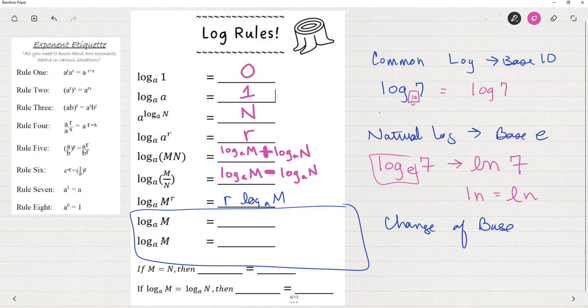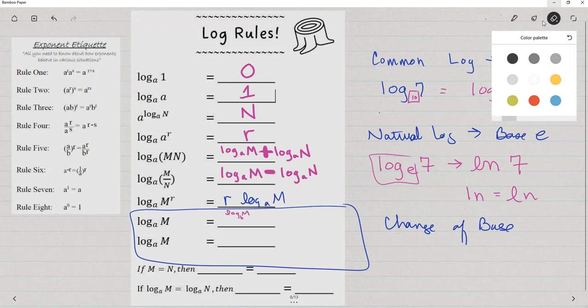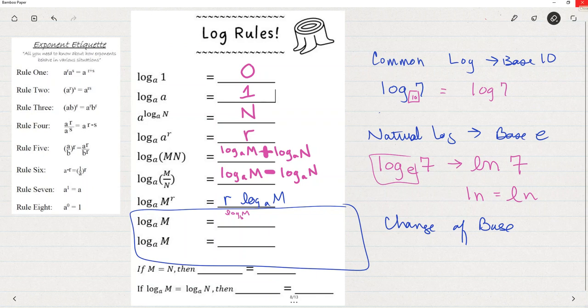If I want to change the base to base 10 or base e, here's the handy thing I can use, that I can say that the log base a of m is equal to the log base anything of m, let me write it over here where it's a little bigger, log base anything of m divided by log base anything of that base, log base b of m over log base b of b. Here's what we're going to do with this. We're going to say that this is log base 10 of m over log base 10 of a.